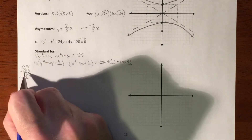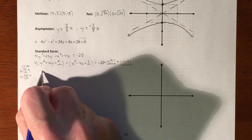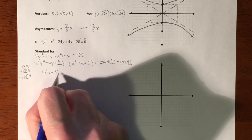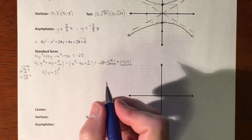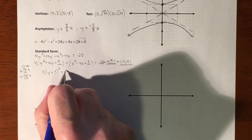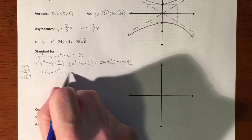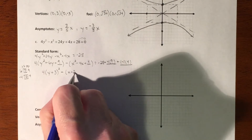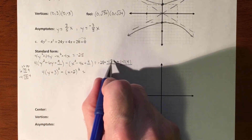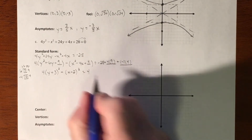Now I factor the y trinomial: what multiplies to 9 and adds to 6 is 3, so it factors into (y + 3)², which I can write with an exponent. Then for the x trinomial: what multiplies to 4 and adds to negative 4 is negative 2, so that factors into (x − 2)². On the right side, 36 minus 28 minus 4 adds up to 4.